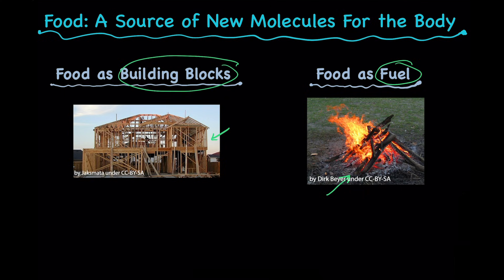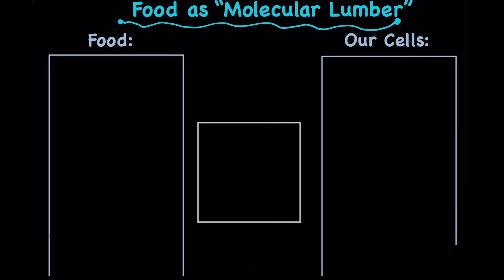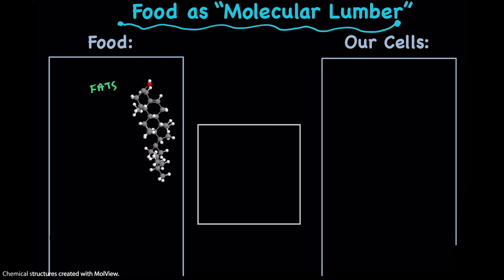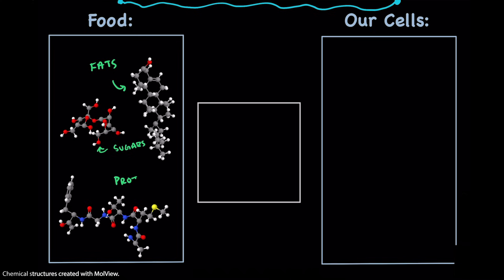But in order to understand how and why this can happen, we need to briefly discuss the molecular basis of food. So what are the molecules in food? Let me introduce you. Generally speaking, food is made up of these three classes of molecules. First up are fats, then we've got sugars, and finally some protein.